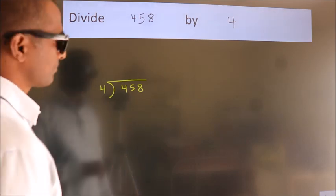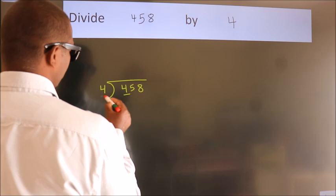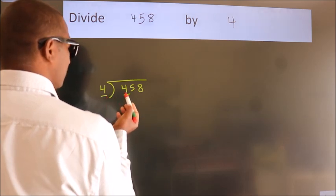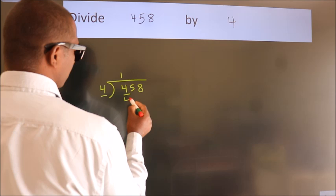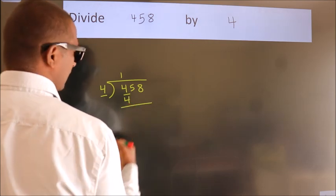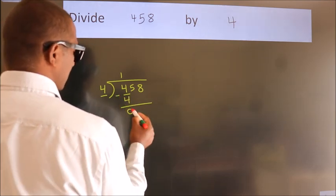Next, here we have 4. When do we get 4? In the 4 table: 4 once is 4. Now we subtract and get 0.